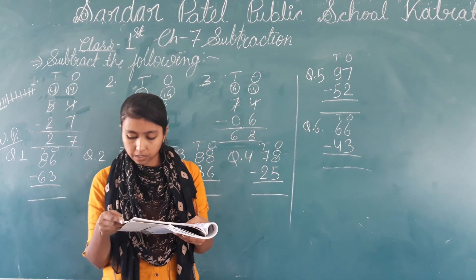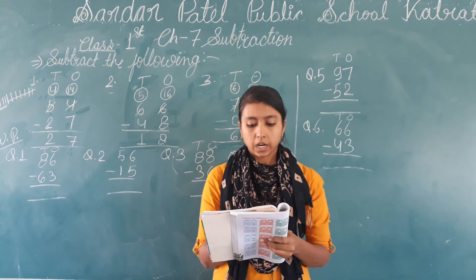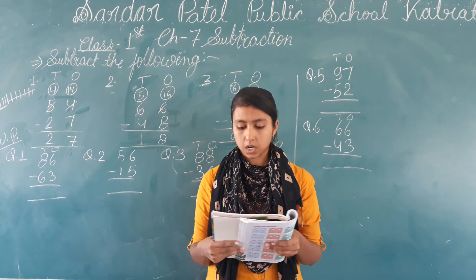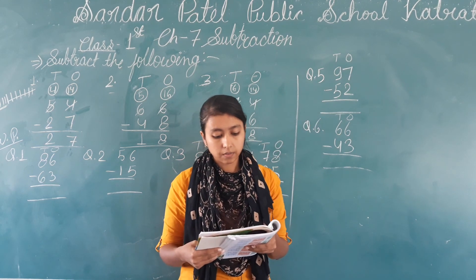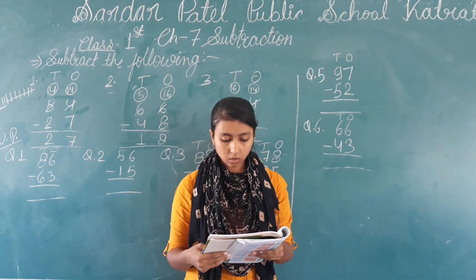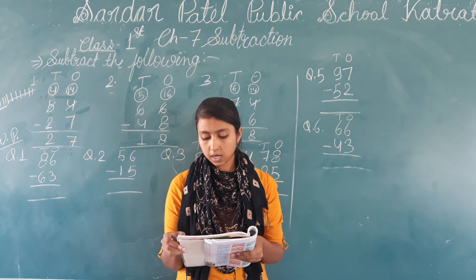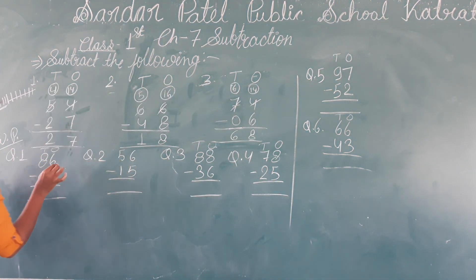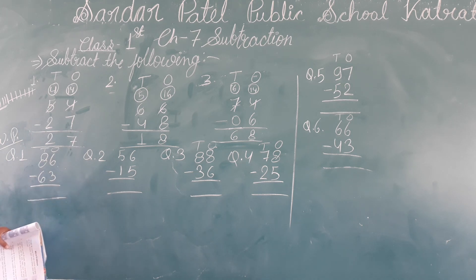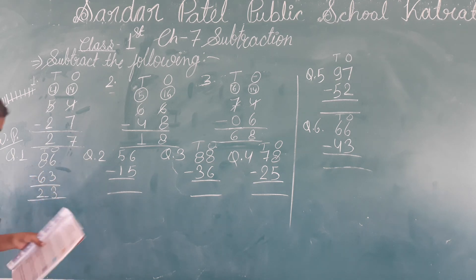Our book, page number 73, has word problems. We will do the first question: I bought 86 toffees from the market and gave 63 to my friend. How many toffees were left with me? We will minus 63 from 86. Is 6 bigger or 3 bigger? 6 is bigger, so no borrowing needed.